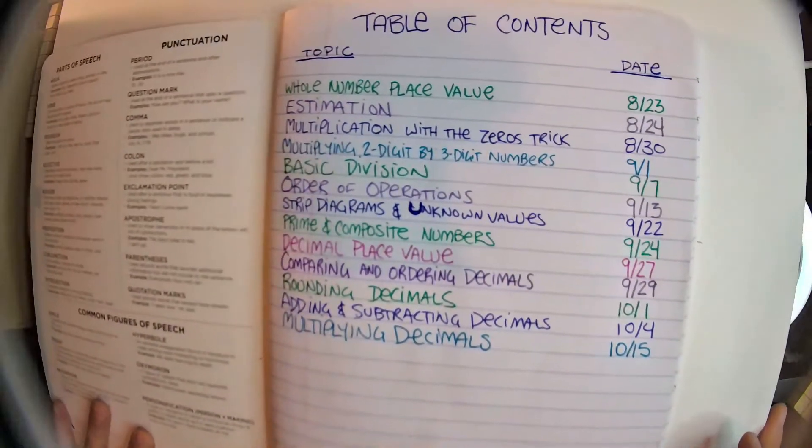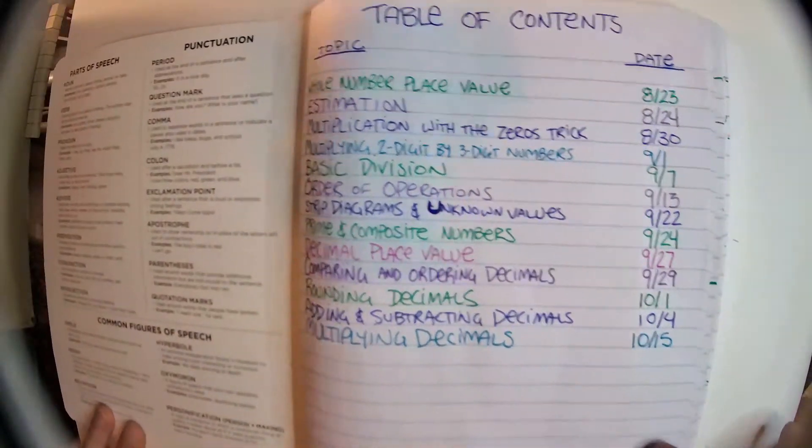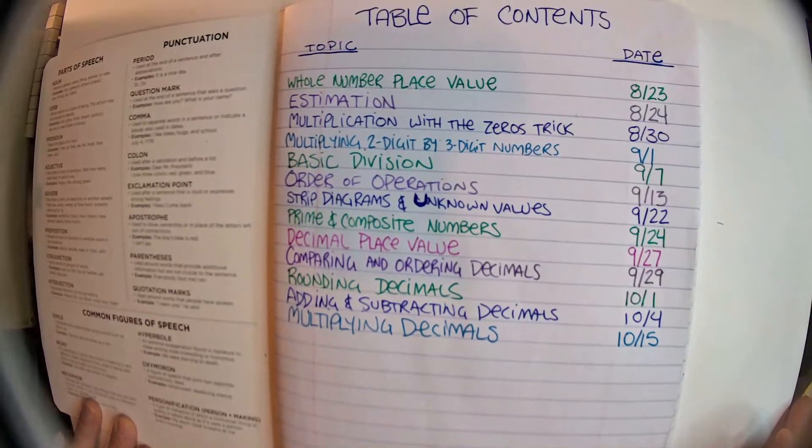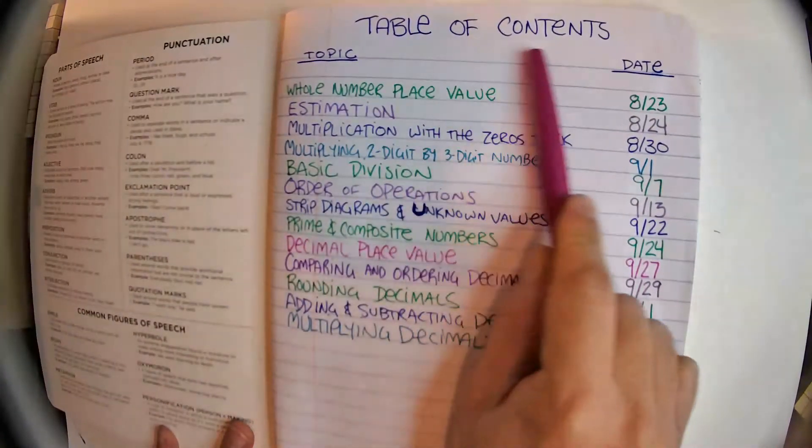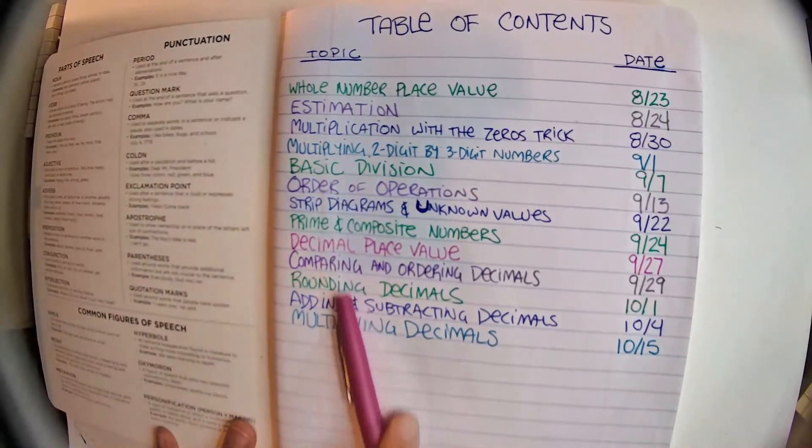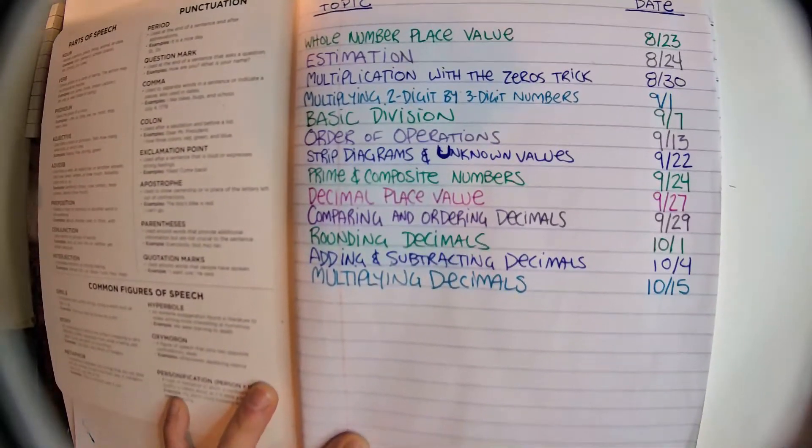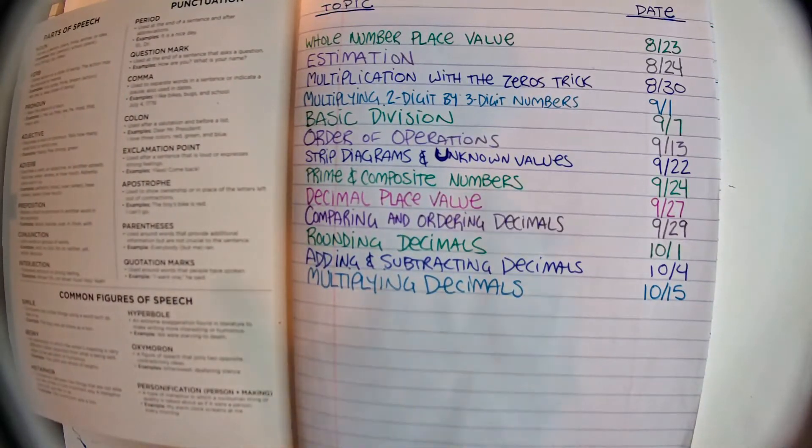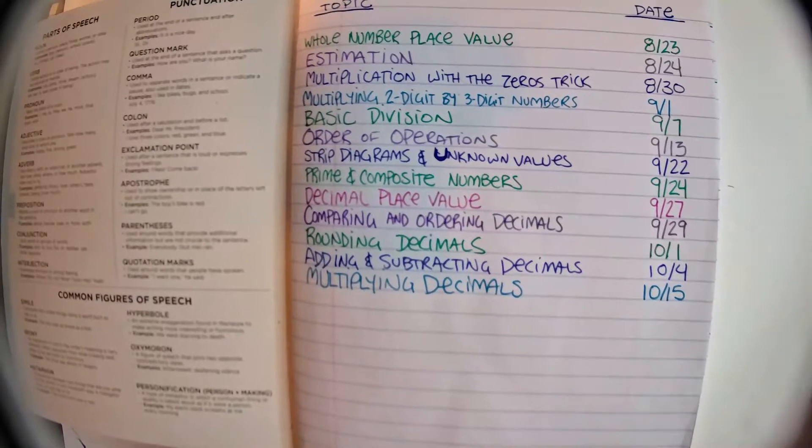Oh, hello. This is another notes page. Here's our table of contents. You can tell because it says table of contents, and there's all of our topics. Look how many topics we've learned already. We are super math learners.